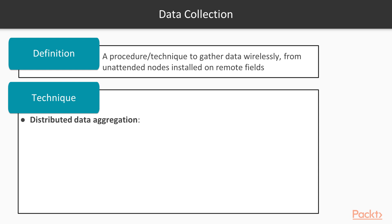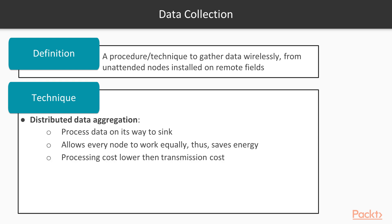One of the ways is distributed data aggregation, where the data is processed on its way to the sink. In this way, all of the nodes work equally to save energy, because processing cost is much lower than the transmission cost.